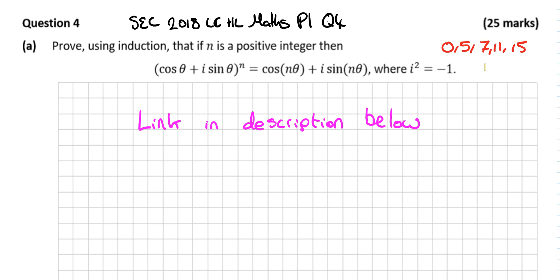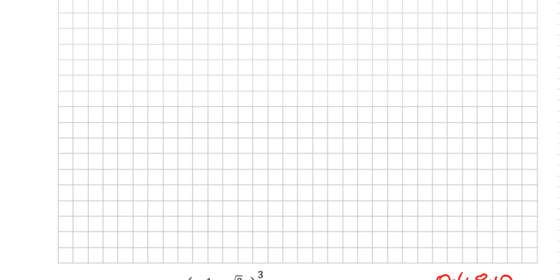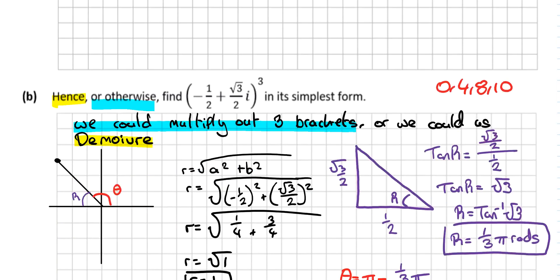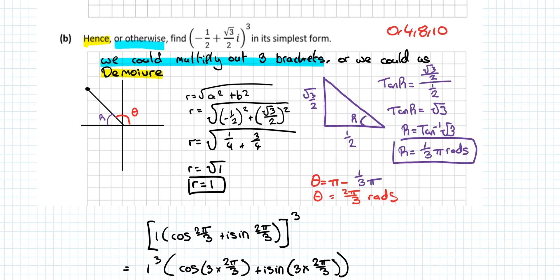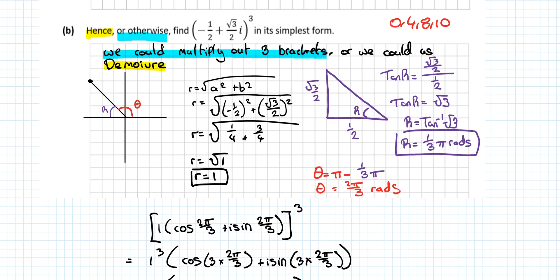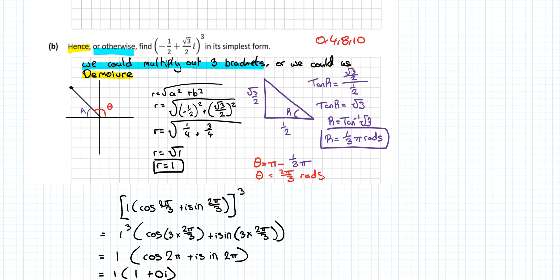I would imagine in 2016 it wasn't answered very well, so they decided to ask it again. The B part of the question is a 10-mark question, obviously because the first part was a 15-marker.